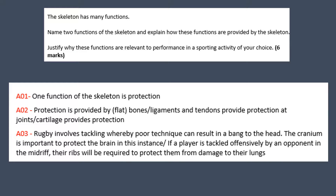You can format the answer however you like, but it may be easiest to use two main paragraphs, each with an AO1, an AO2, and an AO3. For our first paragraph, our point can be that one function of the skeleton is protection. For AO2, our explanation could be that protection is provided by flat bones — for example, the sternum protects the heart and the lungs.